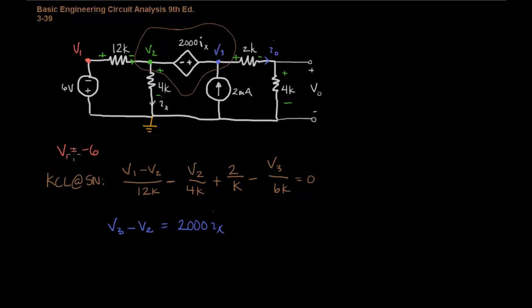Okay, so we have three equations, but we have four unknowns because we've introduced this IX. Well, this IX is also right here in the circuit. And so we can now rewrite IX in terms of voltages and resistances. So remember that IX equals V2 over 4K.